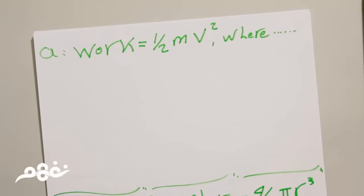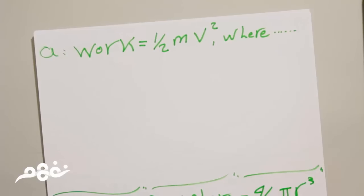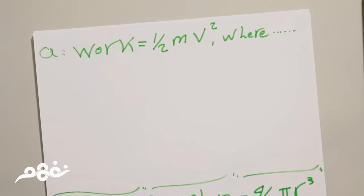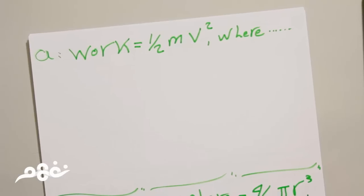Hello dear student, welcome to our first episode in physics. Today we are going to make a quick review on lesson 1. The first equation we have is to prove that work equals half mass multiplied by velocity squared.